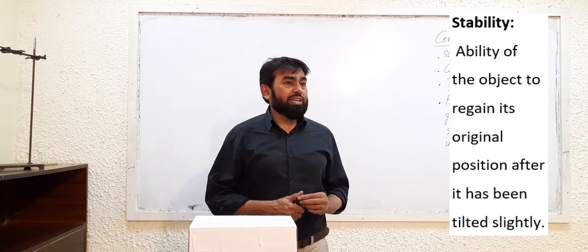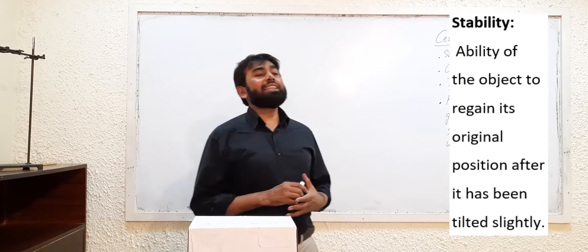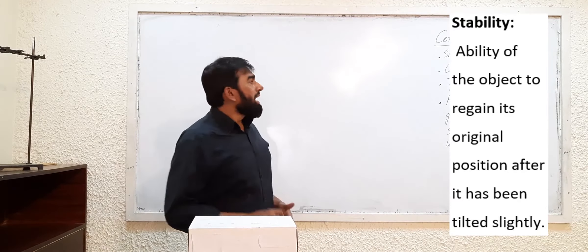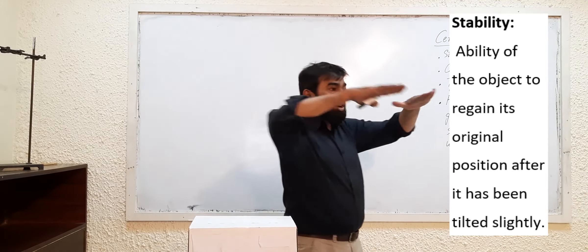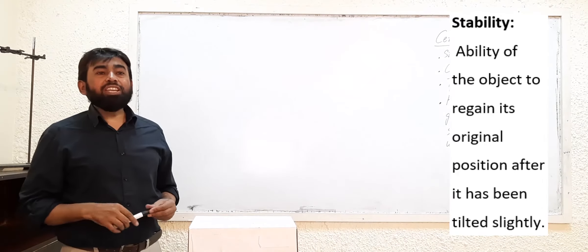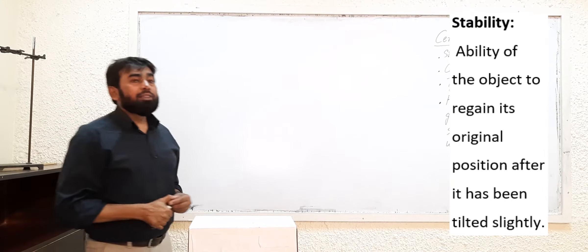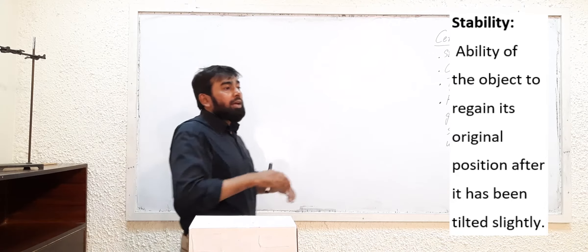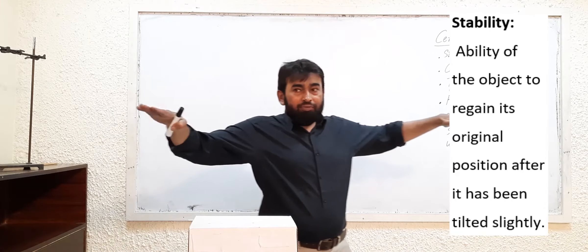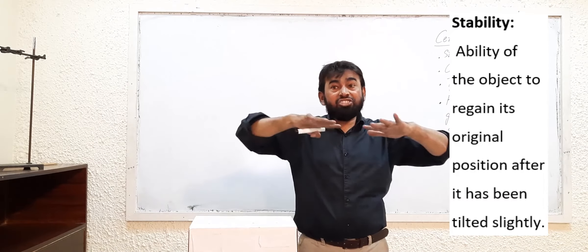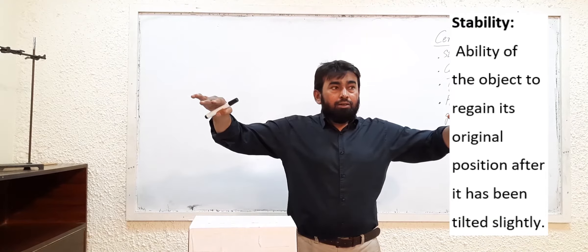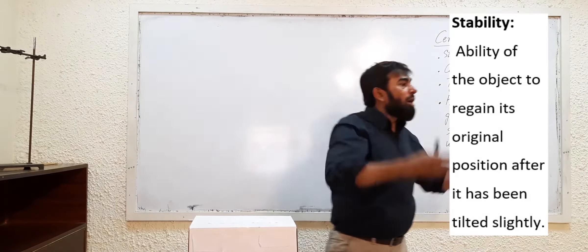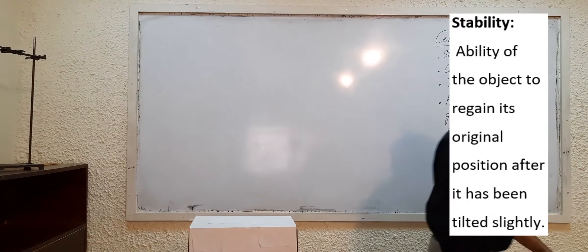The second thing affecting stability is the base area of the body. The larger the base, the more stable the object will be.